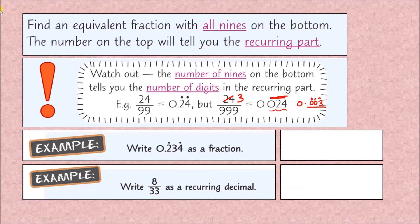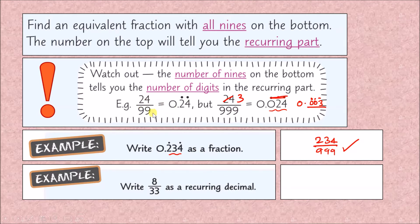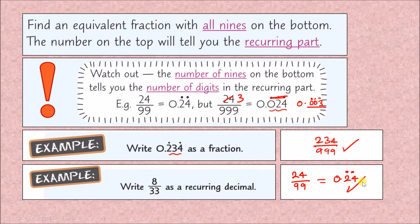Two quick examples. First: write 0.234 recurring as a fraction. We notice three digits recurring, so it's 234 over 999 — don't simplify. Second: write 8 over 33 as a recurring decimal. We need nines on the bottom, so multiply 33 by 3 to get 99. Multiplying 8 by 3 gives 24, so the answer is 0.24 recurring. Let's jump to the exam questions.